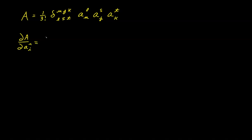Well, first we'll start with these constants: 1 over 3 factorial times the delta term, delta U J K L S T. We've got these three factors and of course to find the derivative of those we need to use the product rule.